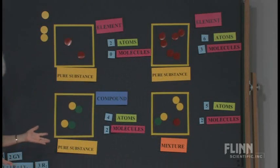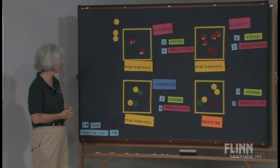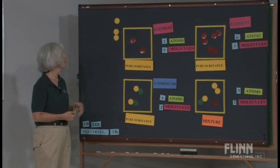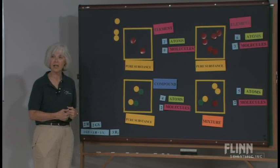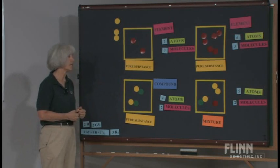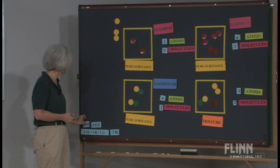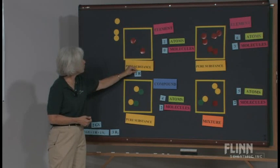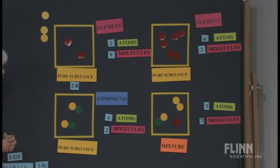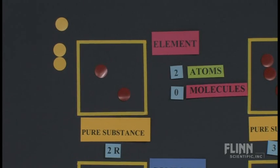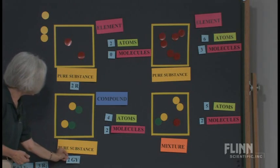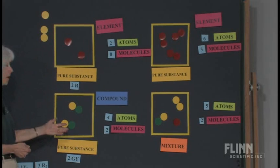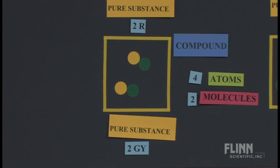And then we're going to write some formulas. But these formulas are just going to be based on the color. So if you have a red, it's going to be R. If you have a yellow, it's going to be Y. If you have a green, it's going to be G. And so then what we can do is we can say, okay, we would represent this as two R. We have two things and they are each red. We would represent this as two GY, green and yellow. And we have two of them.